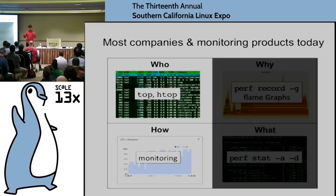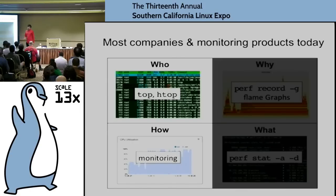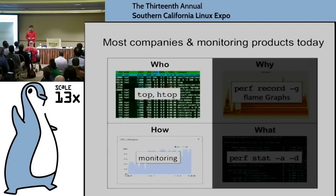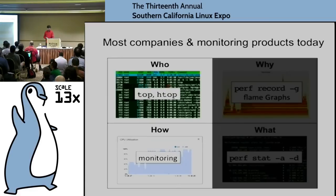Most companies doing performance monitoring today are really good at the who and the how, but really bad at the why and the what. You know Java is at 100% CPU — but why exactly? What code path? Is it in the JVM? Is it in the compiler? Is it in GC? A lot of the time people treat applications as a black box, add print statements, dump to a log, or just make assumptions. Profiling will show you what's really happening and why you're really eating CPU cycles.